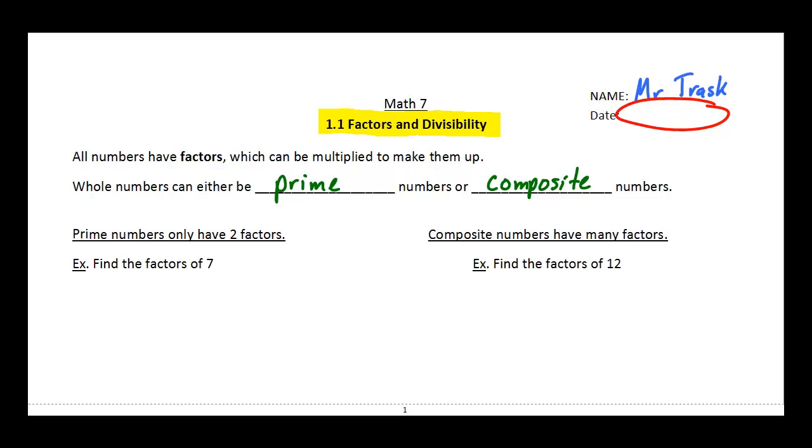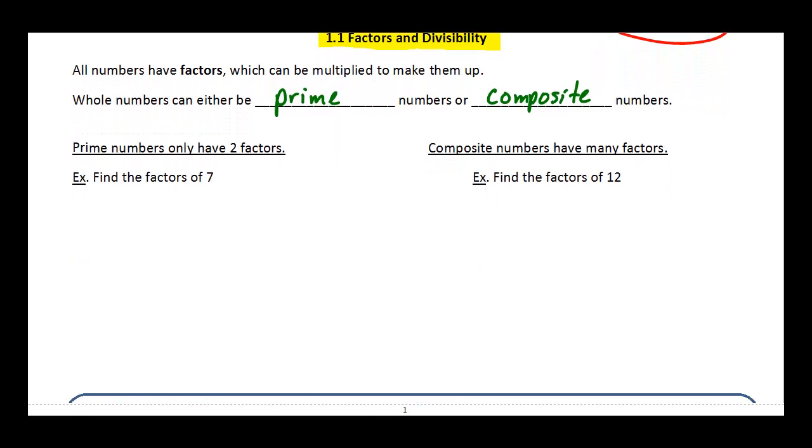Now, prime numbers are numbers that have only two factors. So an example of a prime number here would be seven. So it asks us find the factors of seven. Well, we've got one and seven, because one times seven equals seven. And that's really the only way we can make a seven by multiplying whole numbers together.